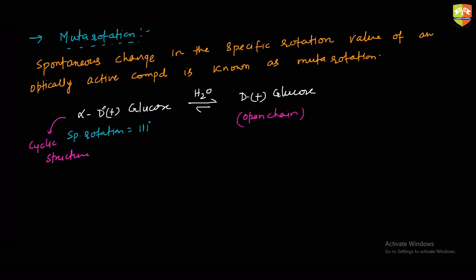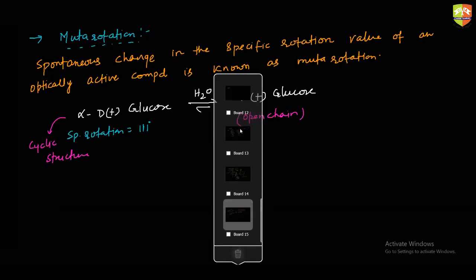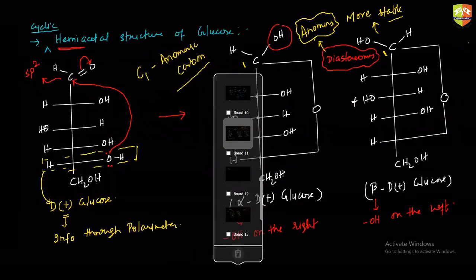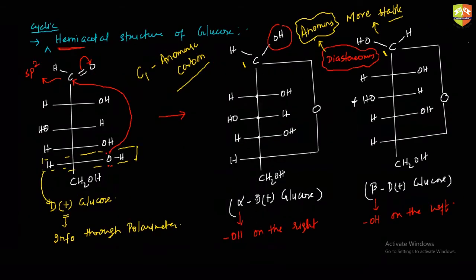When you put alpha D-plus glucose into water, look at the hemiacetal structure — H-plus comes over here, this bond breaks, H-plus goes out, we get a double bond here, and it converts back into the open-chain structure. In aqueous medium this is reversible, and when the OH attacks again, we have two possibilities: we can get alpha or we can get beta.